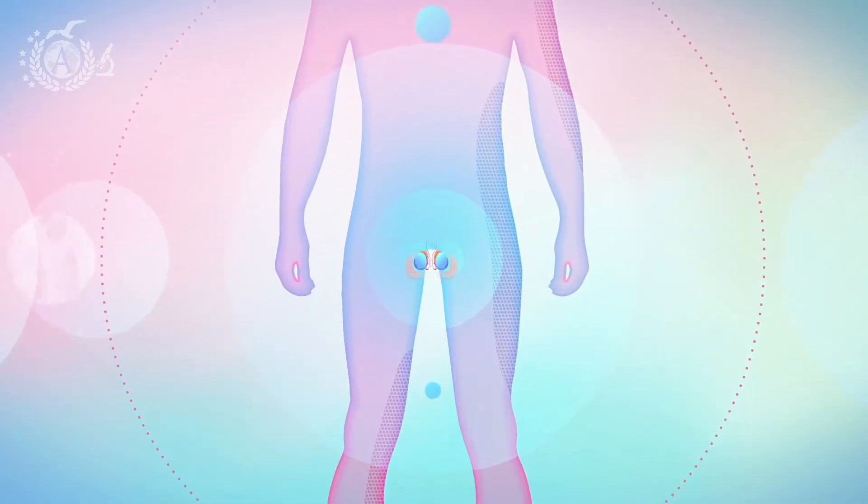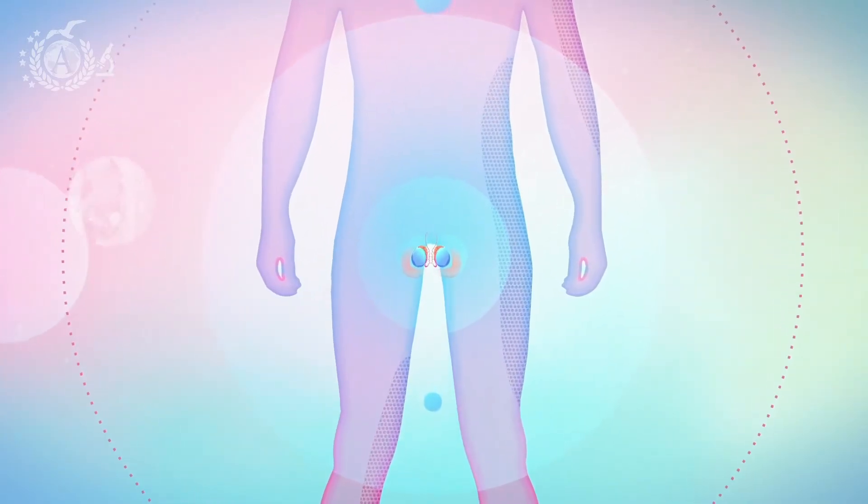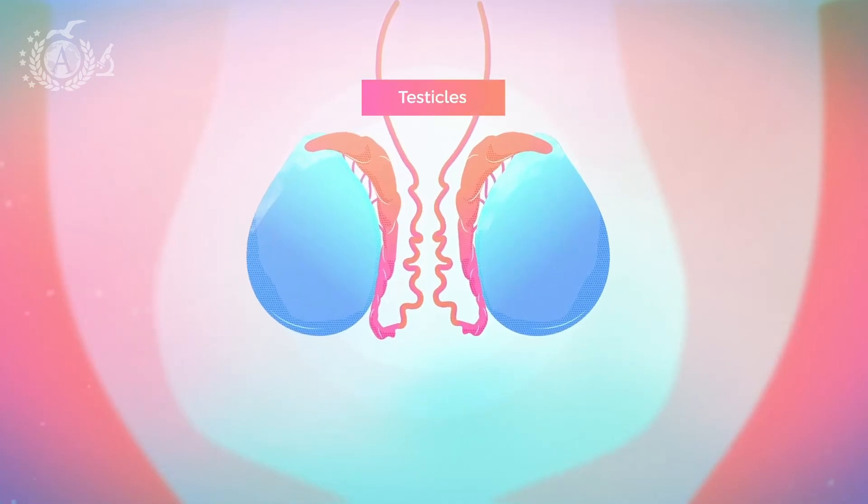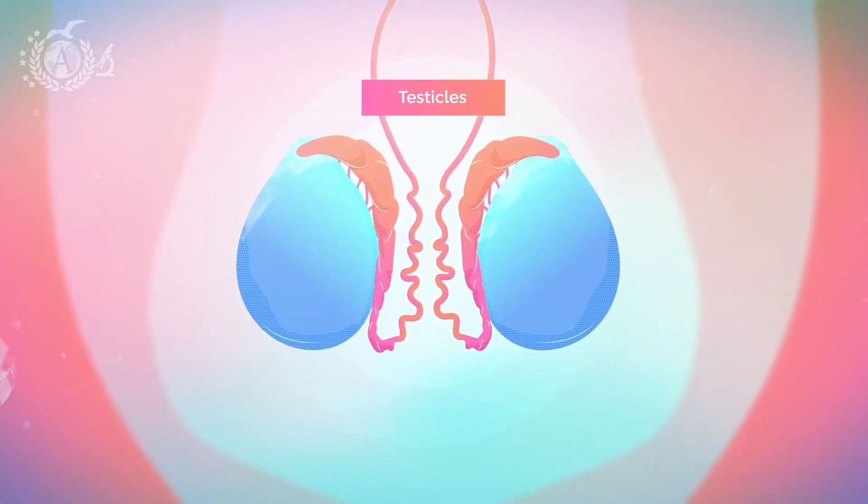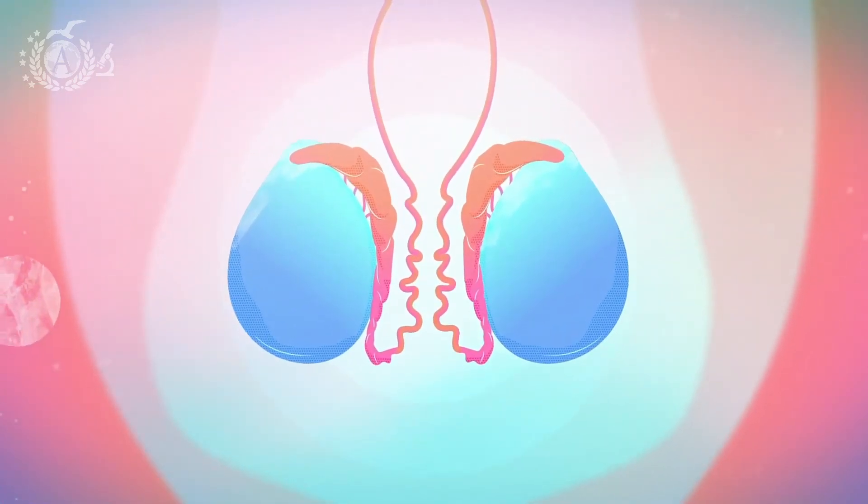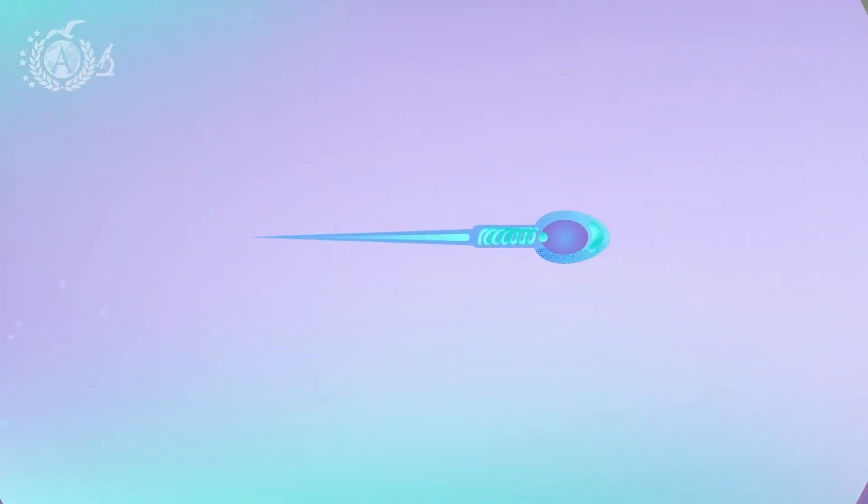And the basis of it is the testes, where the formation of sperm cells and the initial phase of their maturation take place. But in order for these to reach the ovum, they still need to learn to move and fertilize.